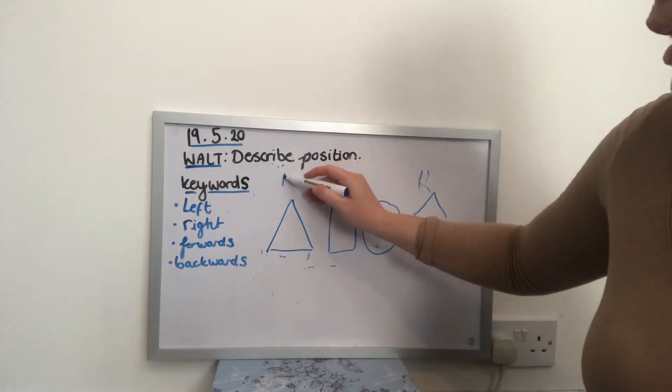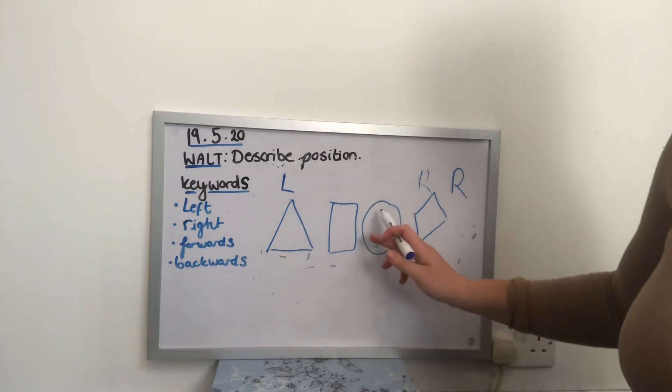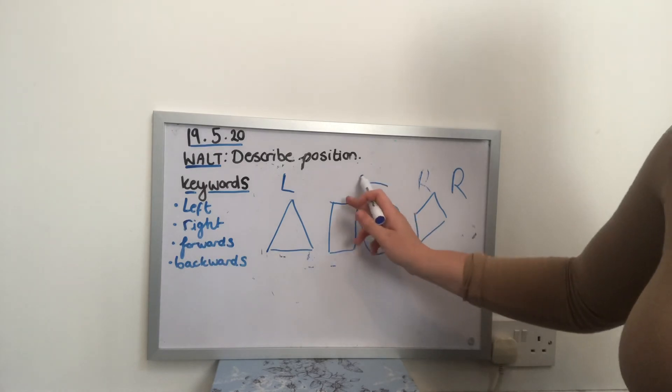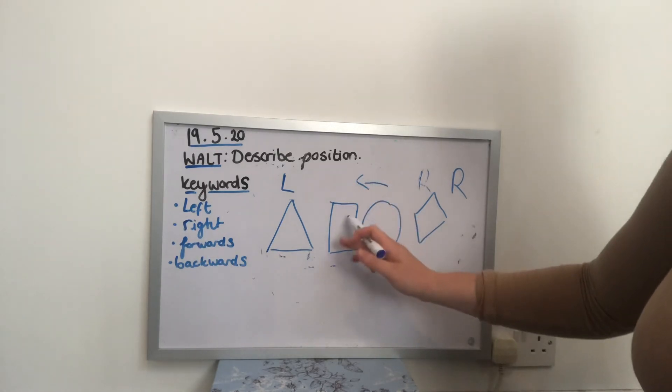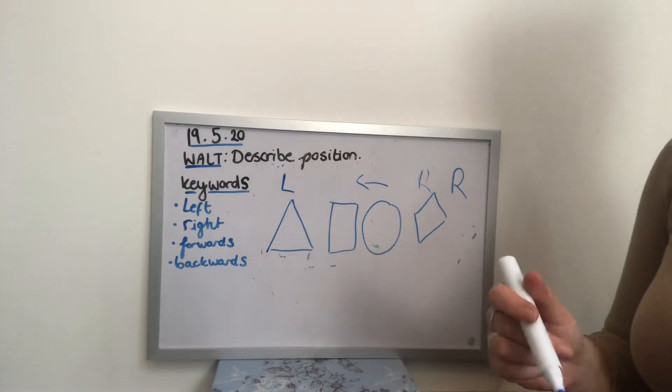So on the left of my circle, I know it's this way. Okay, so I have my rectangle and my triangle. On the left of my circle is the rectangle and the triangle. Brilliant.